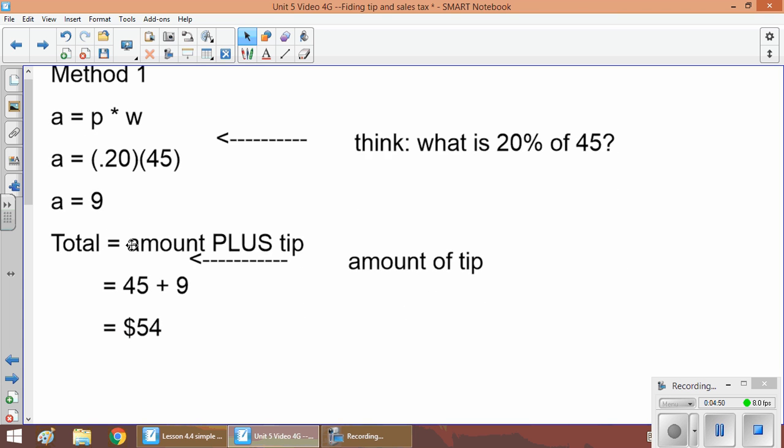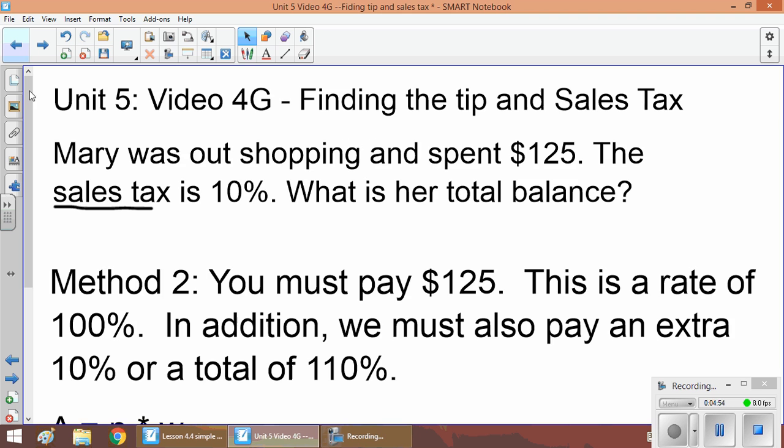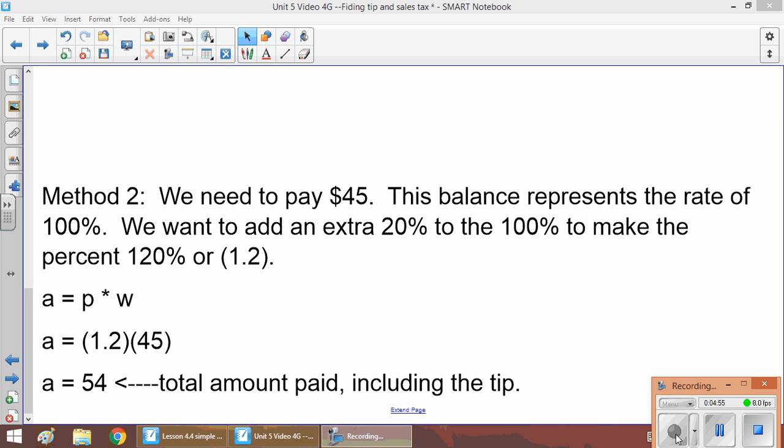Okay, and Method 2. All right, sorry about that. In Method 2, we know that we need to pay $45. So this balance represents 100%. So when you go to a restaurant or a diner or a deli, whatever the total is, you can't negotiate and say I'm only going to pay $30 or $15. Or if it's $45, you have to pay $45. So that, in percentage representation, it's 100% of the rate.